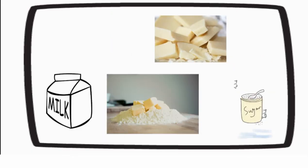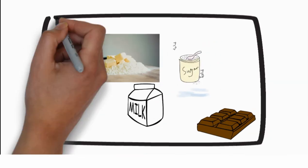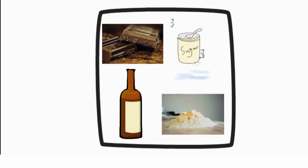White chocolate contains cocoa butter, milk, and sugar. Milk chocolate contains chocolate liquor, cocoa butter, milk, and sugar. And dark chocolate contains chocolate liquor, cocoa butter, and sugar.